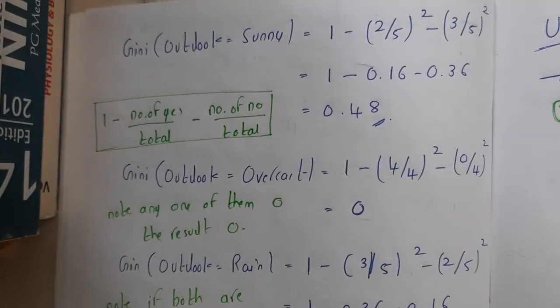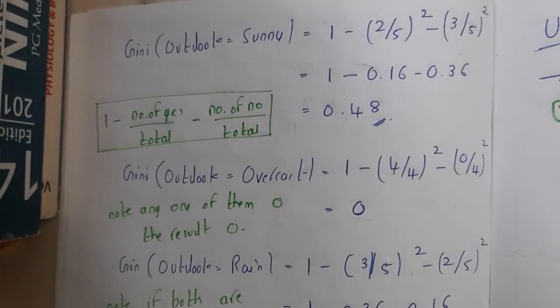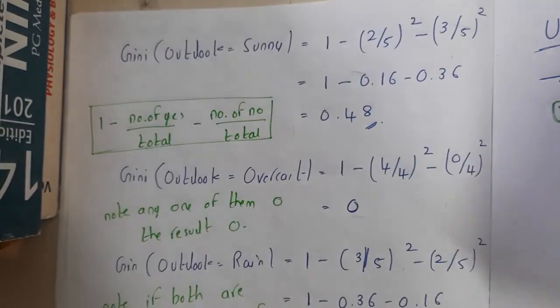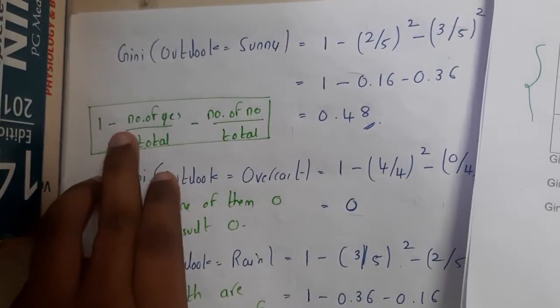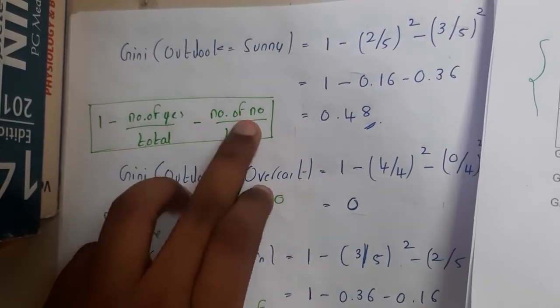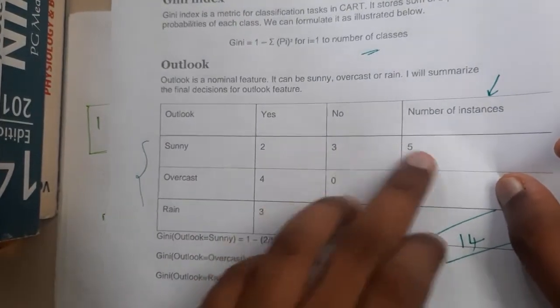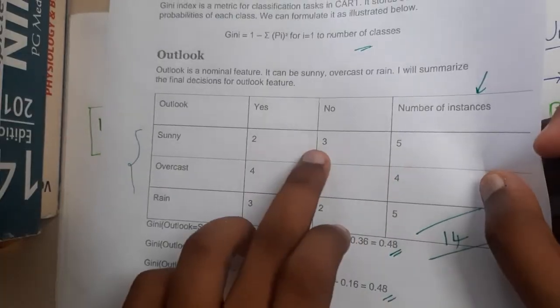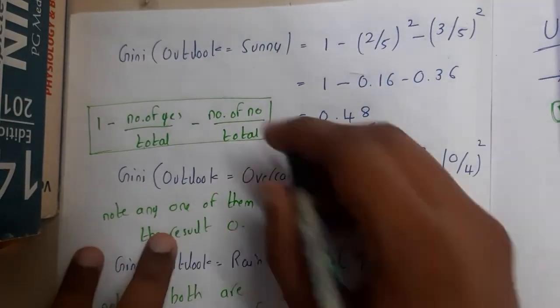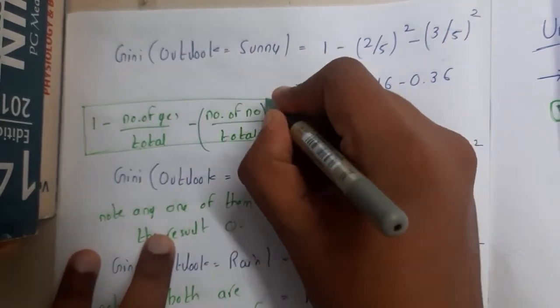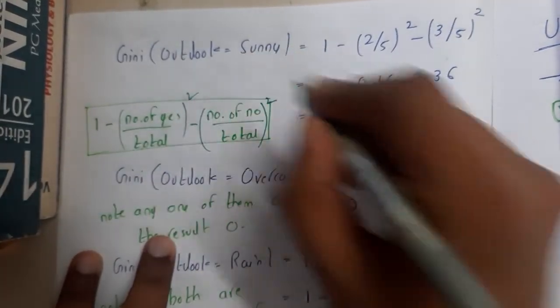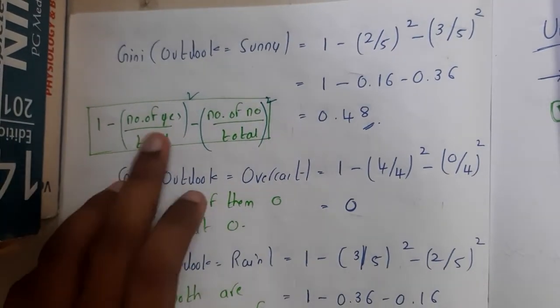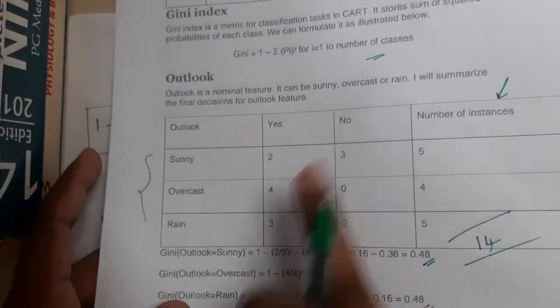Let me clarify the formula once more using the table. For Sunny with 2 Yes and 3 No out of 5 total: Gini = 1 - (2/5)² - (3/5)². Make sure you apply the whole square to each term — I apologize for forgetting to write the square notation earlier. Always use whole squares in the Gini formula.